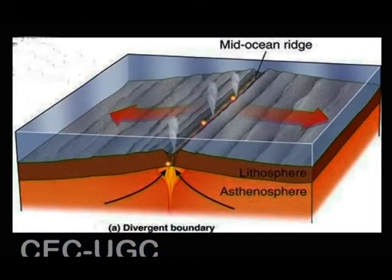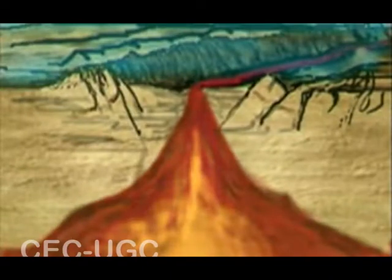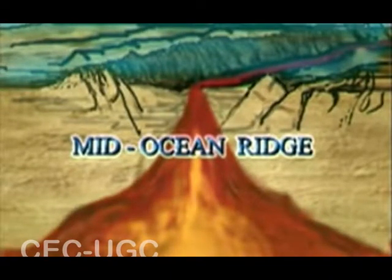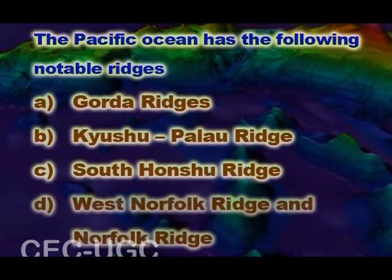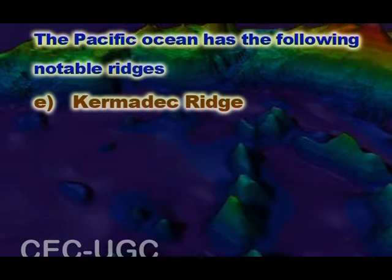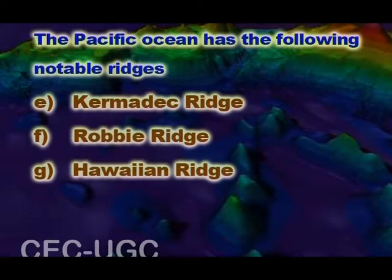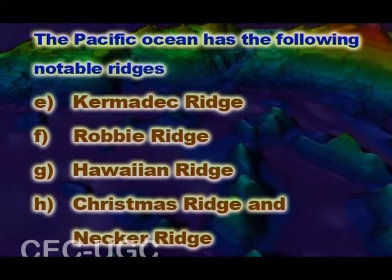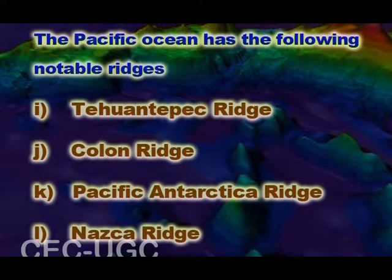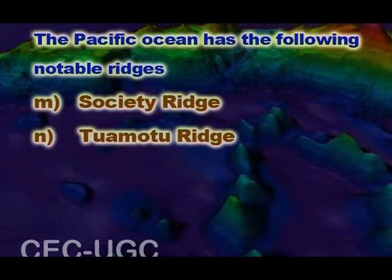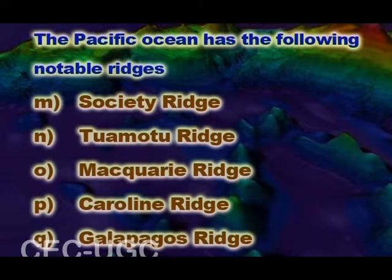One of the most striking features of the ocean floor is the distribution of mid-ocean ridges, which are mountain-like structures standing well above the deep ocean floors. The notable ridges of the Pacific Ocean include the Gorda Ridge, Kyushu-Palau Ridge, South Honshu Ridge, West Norfolk Ridge and Norfolk Ridge, Kermadec Ridge, Robbie Ridge, Hawaiian Ridge, Christmas Ridge, Necker Ridge, Tehuantepec Ridge, Colon Ridge, Pacific-Antarctica Ridge, Nazca Ridge, Society Ridge, Tuamotu Ridge, Macquarie Ridge, Caroline Ridge, and the Galapagos Ridge.